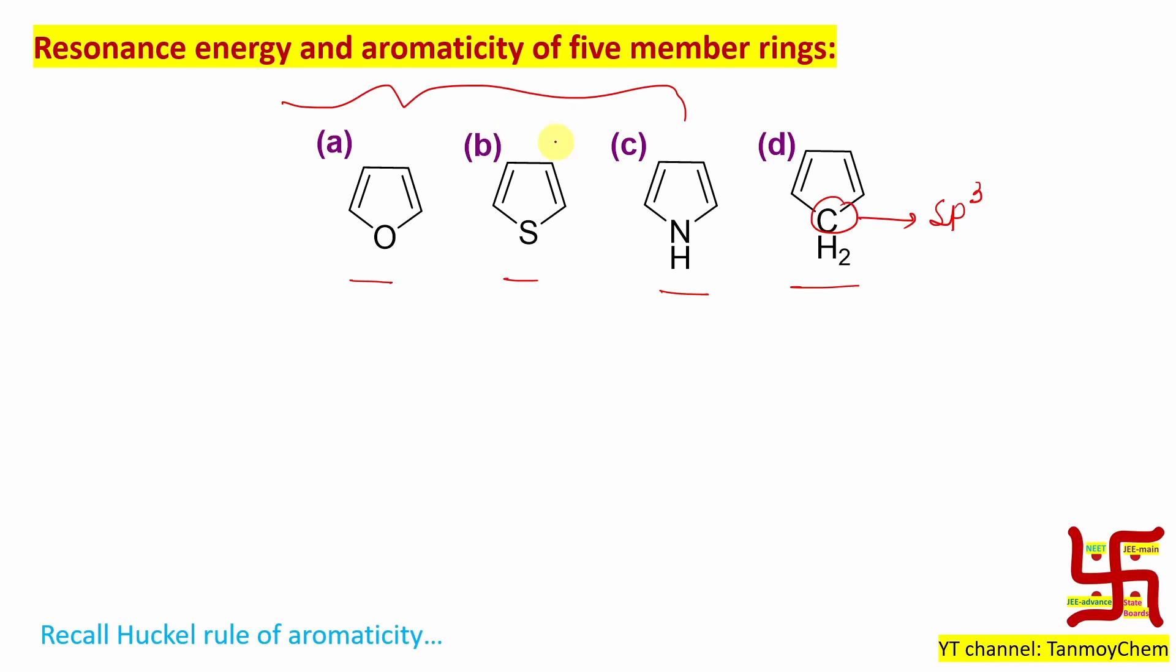If you look at options A, B, and C, all are heterocyclic aromatic compounds because they contain at least one heteroatom except carbon and hydrogen. Here oxygen is the heteroatom, here sulfur, and here nitrogen.